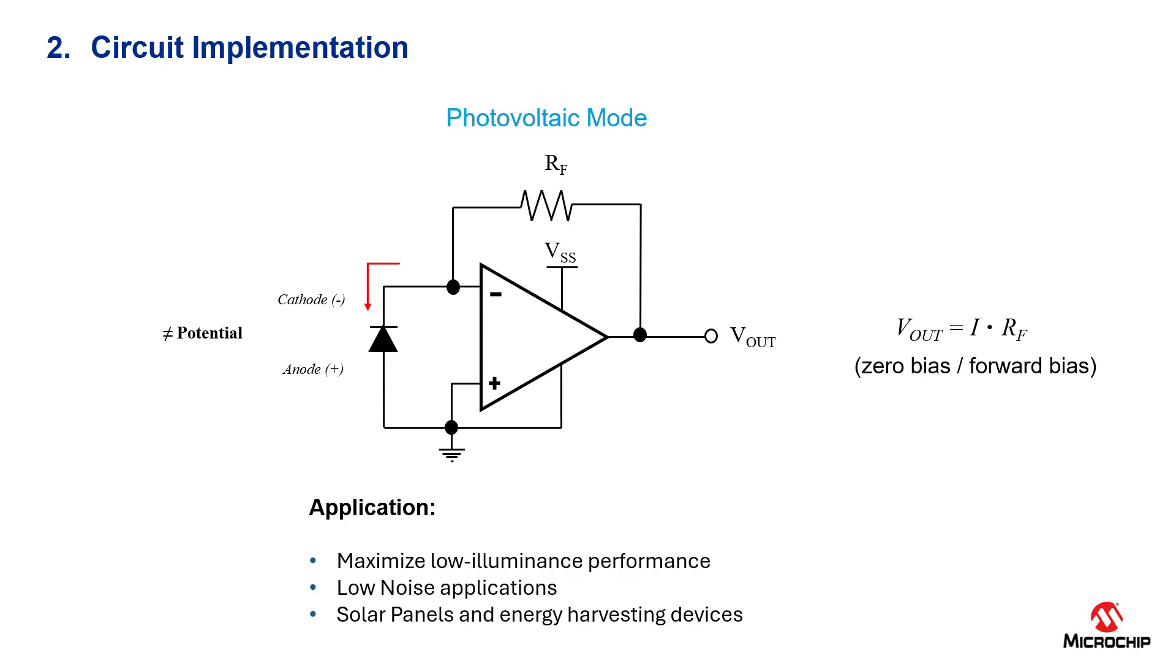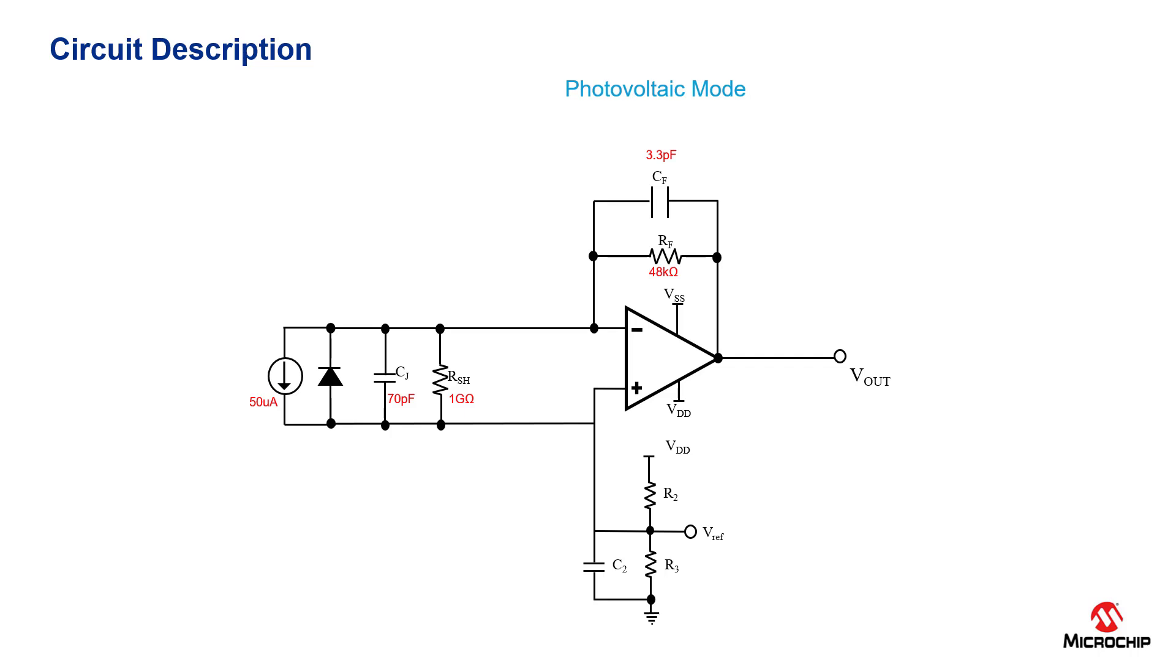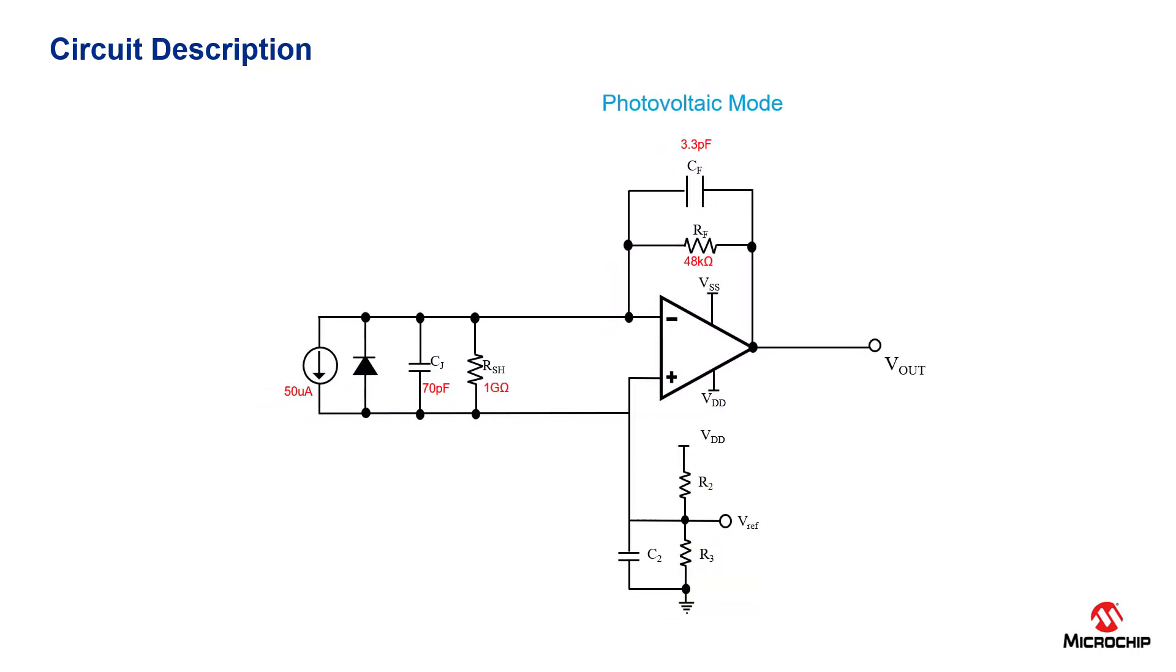Here we have a photodiode amplifier circuit in photovoltaic implementation. The circuit consists of a photodiode, a transimpedance amplifier, and a reference voltage. The only difference from the previous circuit is that the anode is connected to the non-inverted input of the op-amp, making this circuit photovoltaic.